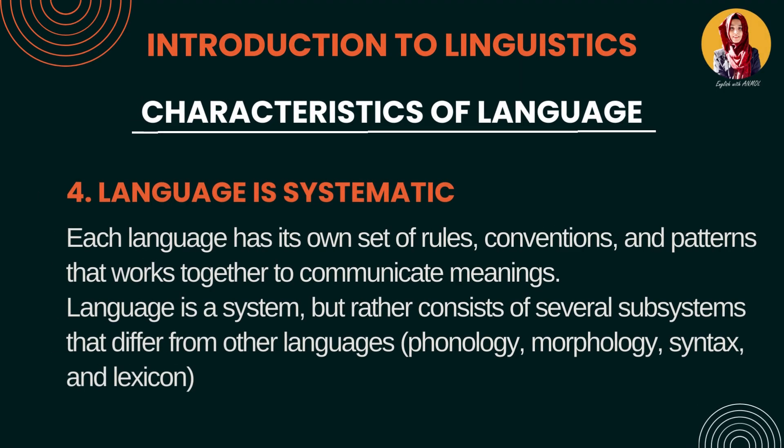Number 4: Language is systematic. Language jo hai systematic hai — kyunki har ek language ke paas rules hain, conventions hain, patterns hain. Hamare paas kuch norms hote hain aur hum log unko follow karte hue language ko use karte hain. Language khud ek bada system hai aur uske neeche subsystems hain — for example, phonology, morphology, syntax, pragmatics, lexicon. Yeh saare subsystems hain language ke, aur in sab ka combination language ko banaata hai.